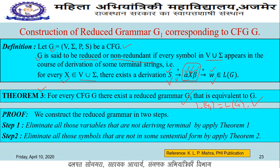We discuss this by Theorem 3, which is used to construct a reduced grammar G1 from grammar G, such that the language described by G1 is equivalent to the language described by grammar G. For this, we first apply Theorem 1 — discussed in Simplification of Context-Free Grammar Part 1 — and then Theorem 2 — discussed in Part 2. Both those lectures are already available in the playlist. Theorem 1 eliminates all variables not deriving any terminal string, and Theorem 2 eliminates all symbols not useful for deriving a sentential form.